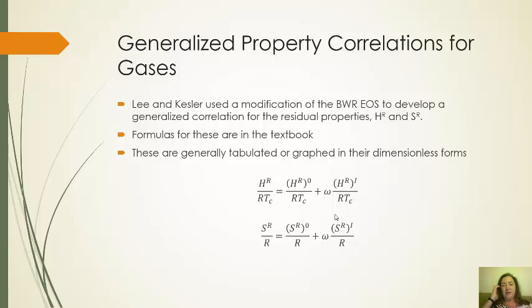These equations, like this graph was representing here, are based on the Lee-Kessler equation of state. Lee and Kessler, what they did was they took the Benedict-Webb-Rubin equation of state and extended it and generalized it so that it would be fitted to the TR-PR data. They applied this to residual properties enthalpy and entropy. The exact formulas for these are in the textbook. I didn't bother putting them in here, but these have been tabulated and graphed in the dimensionless forms.